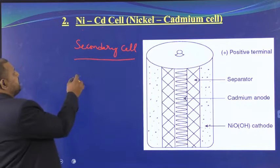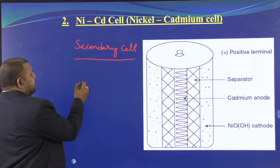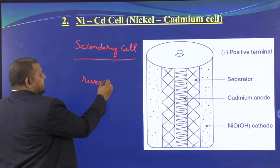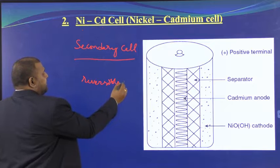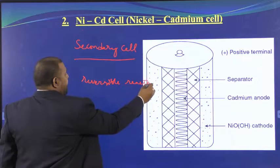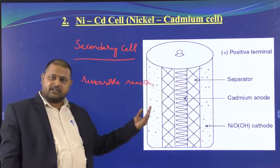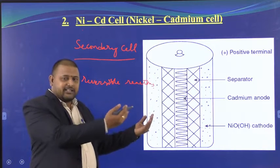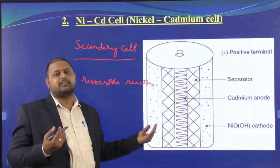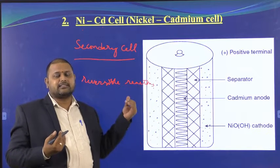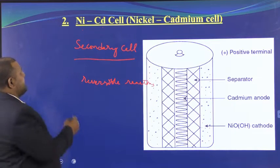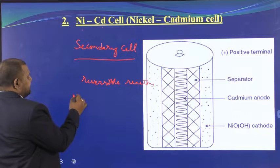That is the main importance of a secondary battery: the cell reactions are reversible. The forward reaction is possible, and if you supply energy, the backward reaction is also possible. That is the main important thing to remember. The best example of a secondary battery is the nickel cadmium cell.